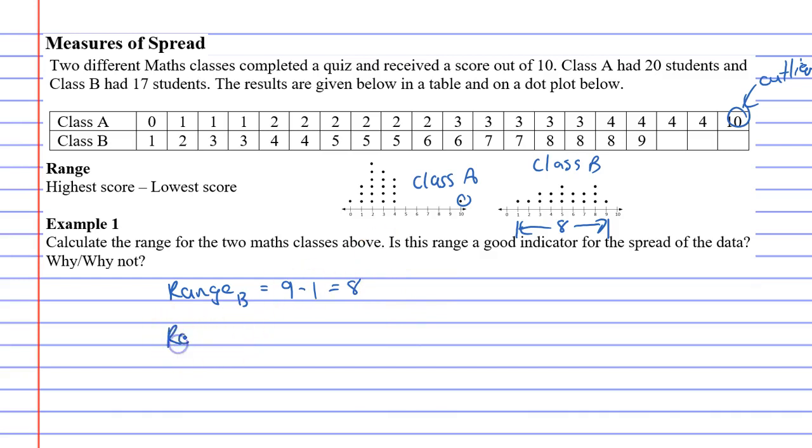Now let's look at the range of class A. And for this one, the largest score is 10 and the smallest score is 0. Now, 10 minus 0 is 10, implying that I've got quite a wide range, a range of 10.